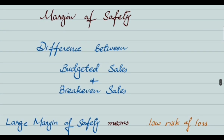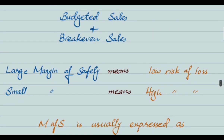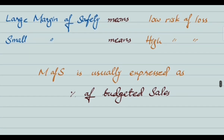Next is margin of safety. This is the difference between budgeted sales and break-even sales. A large margin of safety means a low risk of loss, while a small margin of safety means a high risk of loss. Margin of safety is expressed as a percentage of budgeted sales.